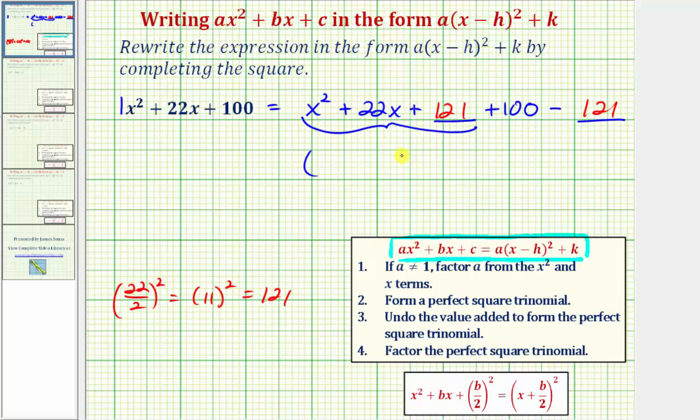We have two binomial factors and then we have 100 minus 121 which is negative 21 or minus 21. And then factoring here we have a factor of x here and here. And the factors of 121 that add to 22 are 11 and 11. So we have plus 11 and plus 11. So in factored form we have the quantity x plus 11 squared minus 21.